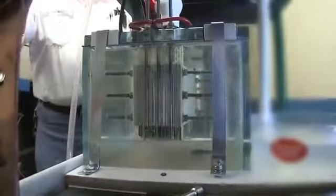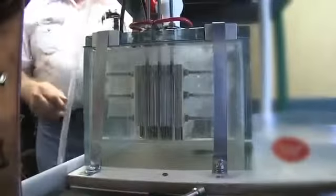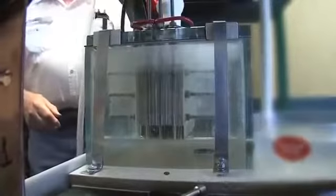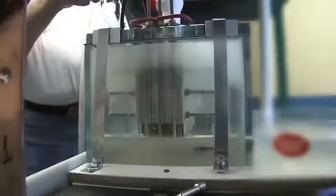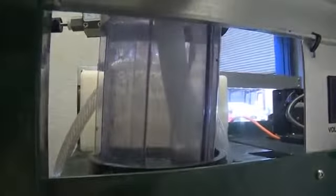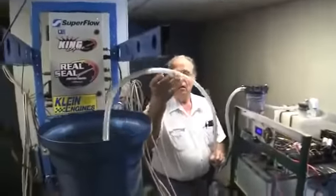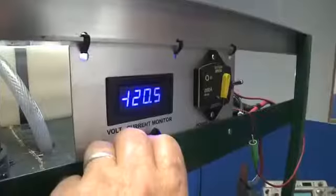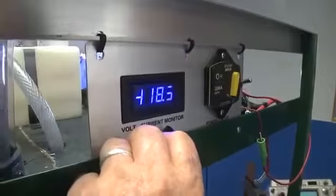HHO generator breaks down distilled water into its primary elements, two parts hydrogen gas and one part oxygen, or HHO gas. This gas is then pumped into the air intake on gasoline or diesel fueled engines, mixing with the fuel and burning in the combustion chamber.